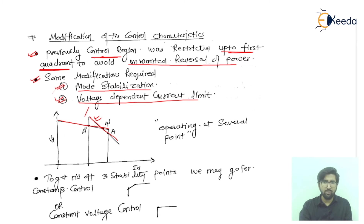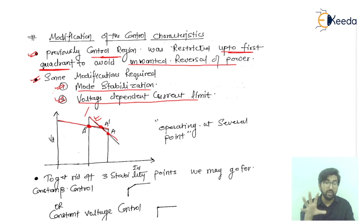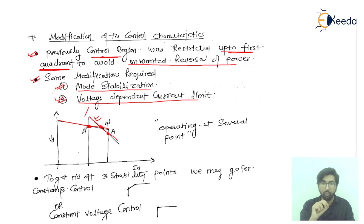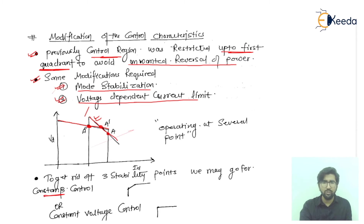There are three operating points here because when both characteristic curves intersect with each other, that becomes the operational point. The slope of the rectifier is less compared to the slope of the inverter, causing several operating points and instability. To address this, we can use constant beta control or constant voltage control.